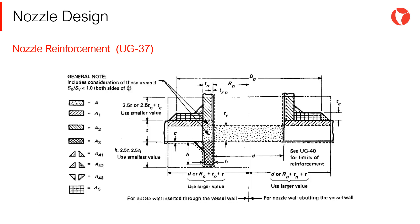If a nozzle cross-section is analyzed, as shown in the picture, there are different areas perfectly differentiated. The basic reinforcement calculation method, laid out in paragraph UG-37, consists of the compensation of these areas. Basically, the area that is removed by drilling the hole — area A in the picture — must be compensated by the sum of all other contributing areas within the reinforcing limits. The calculation method is very simple, though long and repetitive. Designers must remember to always consult the code prior to any calculation.